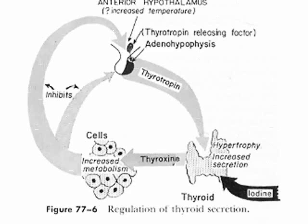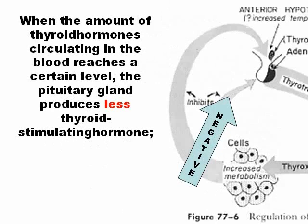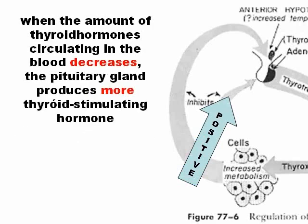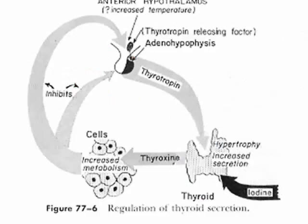Thyroid hormones have a negative feedback to the pituitary and hypothalamus. When there is a sufficient quantity of thyroid hormones, there is a negative feedback. When the levels of thyroid hormones are low, the pituitary gland produces more TSH to stimulate the thyroid. This negative feedback loop regulates the entire hormonal axis.